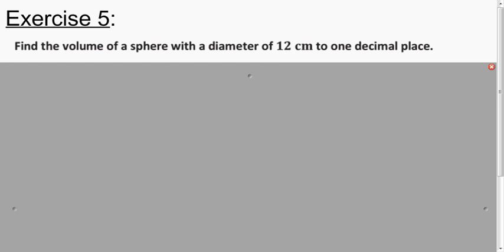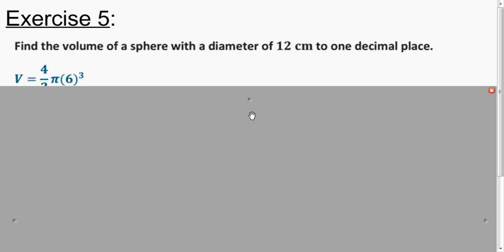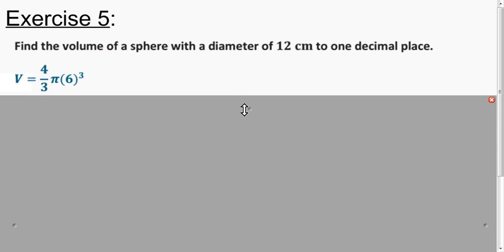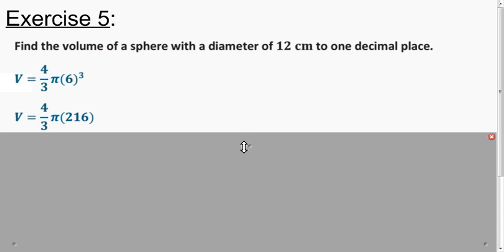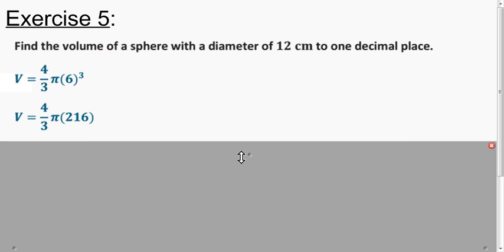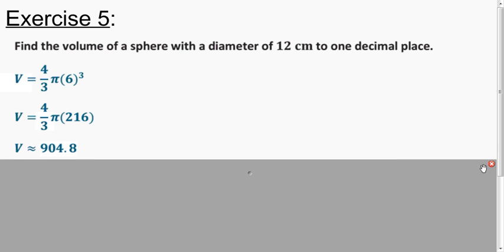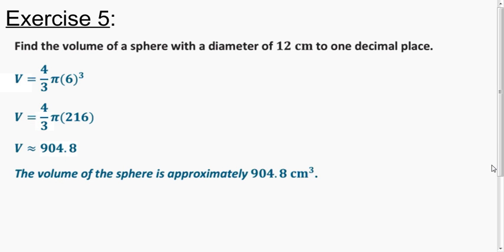Using this formula, calculate the volume of the sphere with this diameter. The diameter is 12 centimeters, so the radius is 6 centimeters. We plug into our formula, and it wants us to calculate to one decimal place. We get about 504.8 cubic centimeters.